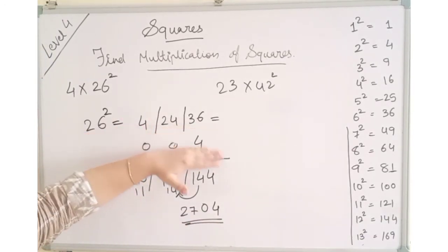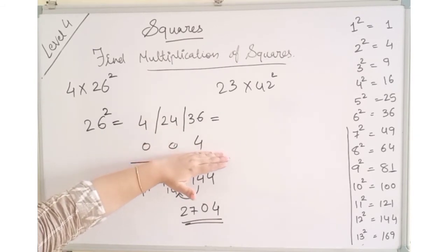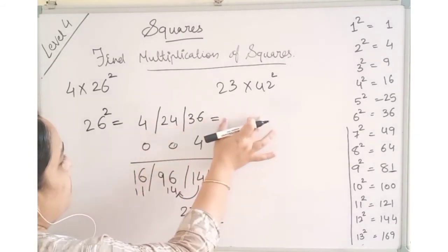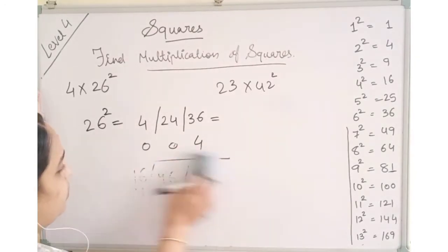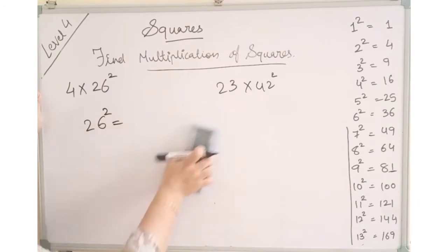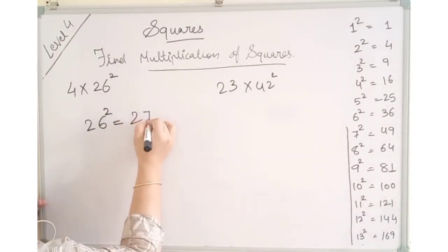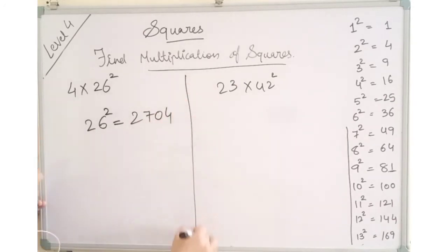You can do this way also. After finding the square, multiply the same answer with this. Or simplify this answer and then multiply it by given multiplication digit. This will also work the same way. Now let's start. Answer was 2, 7, 0, 4.